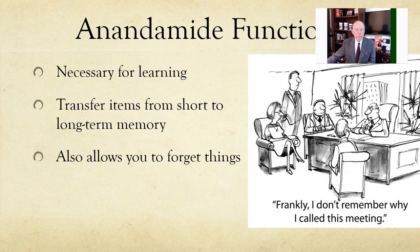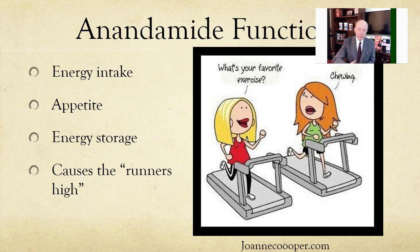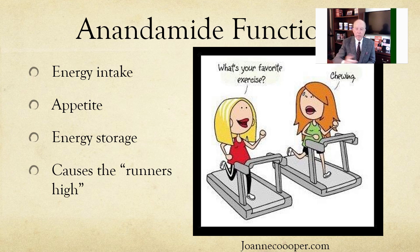Anandamide is also very important for learning — it's important in the brain for transfer of short-term memory, and it can help you either want to remember certain things or forget certain historical things. It is also important in energy uptake, it suppresses appetite, and it's important for energy storage. Interestingly, it's what causes the runner's high. We thought it was endorphins causing runners to feel high after a couple of miles, but it turns out the endorphin molecule can't pass the blood-brain barrier. What is actually elevated when runners get this runner's high is anandamide.